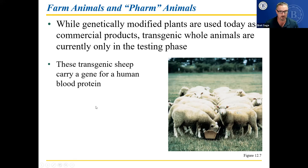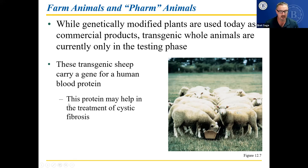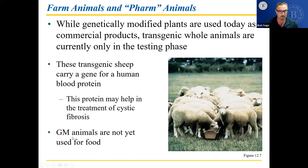These transgenic sheep carry a gene for a human blood protein that can help treat cystic fibrosis. You take their milk or blood and extract this protein to help people with cystic fibrosis treat their disease. You can give animals hormones to help them grow faster, but genetically modified animals are still not really part of our food supply.